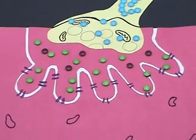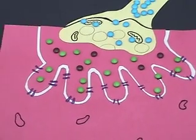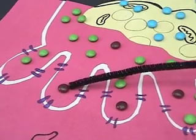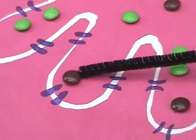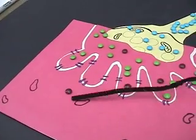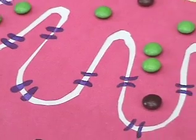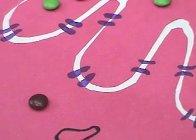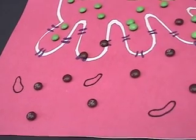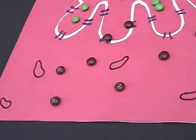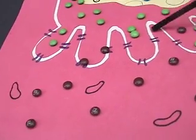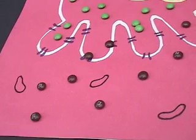The acetylcholine is released from the synaptic knob into the synaptic cleft and is picked up by the acetylcholine receptors on the motor end plate of the skeletal muscle. This causes sodium channels to open, allowing sodium ions to pass through the muscle cell fiber, resulting in depolarization along the muscle fiber. Acetylcholinesterase then breaks down the acetylcholine into acetyl and choline.